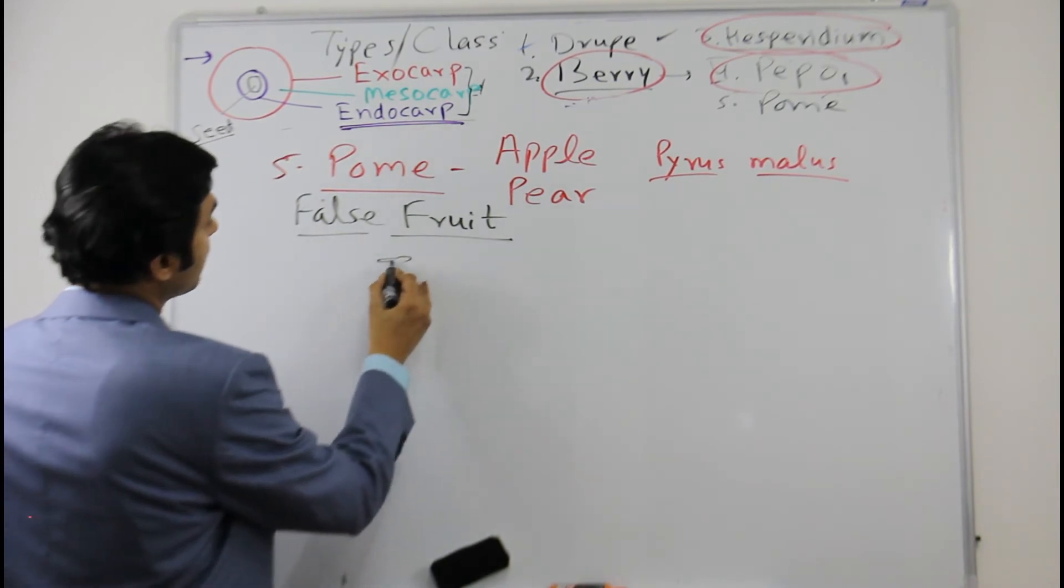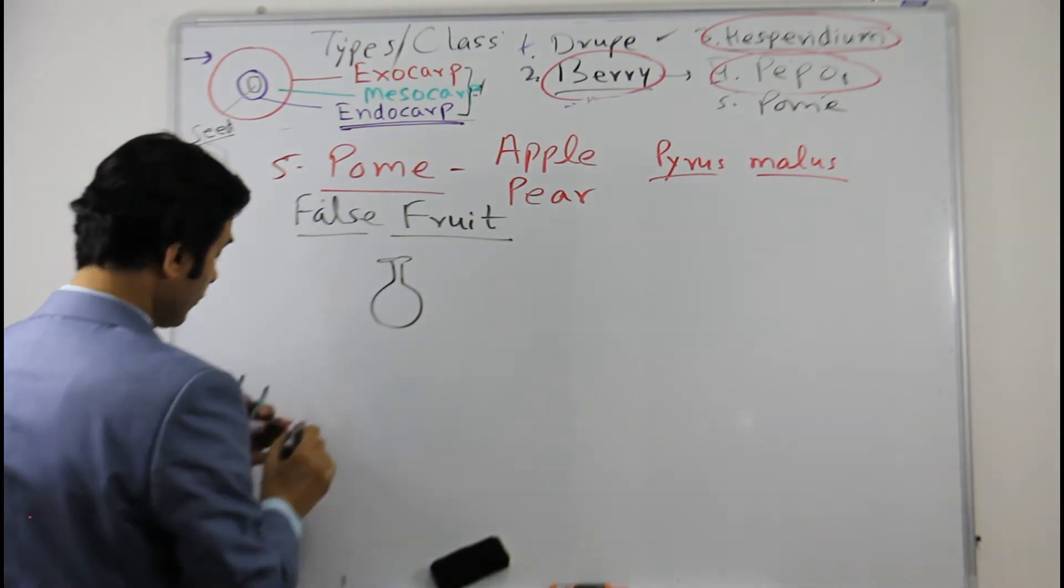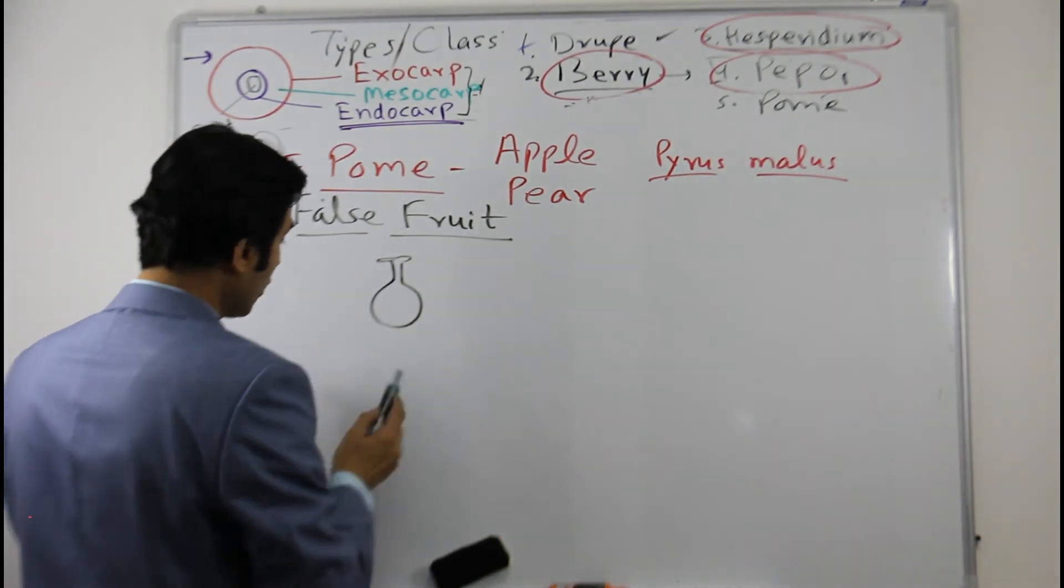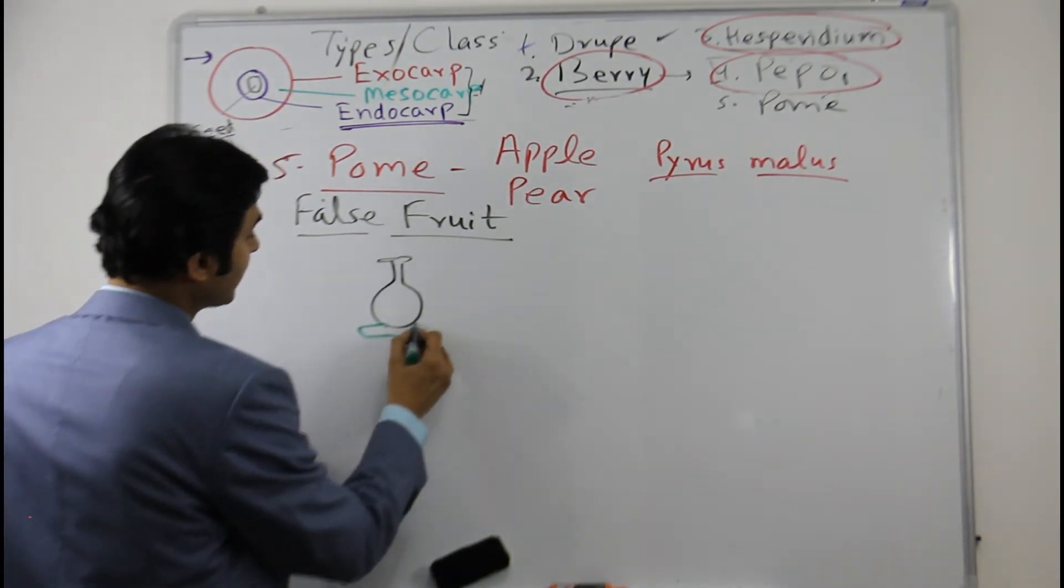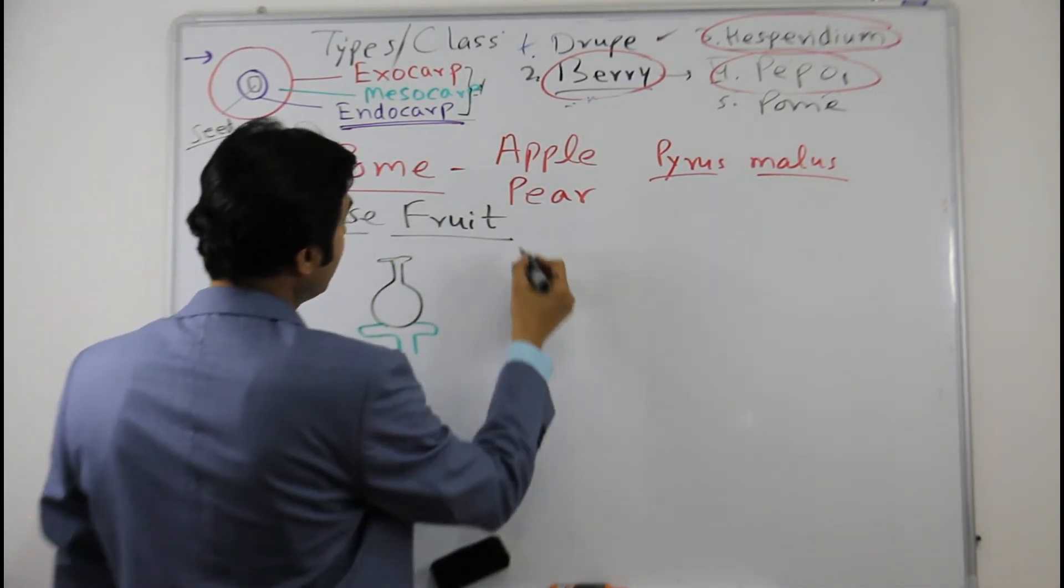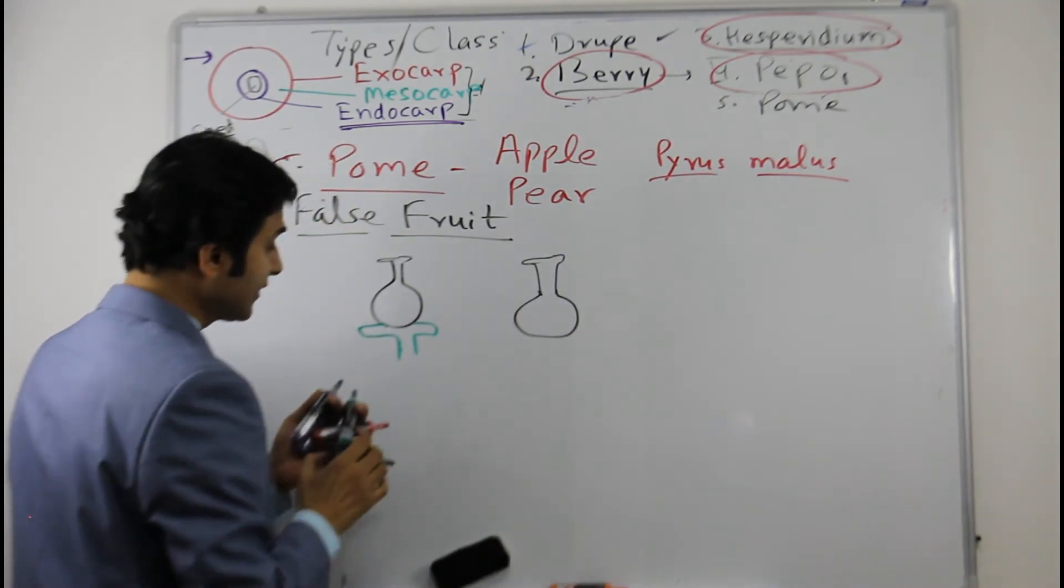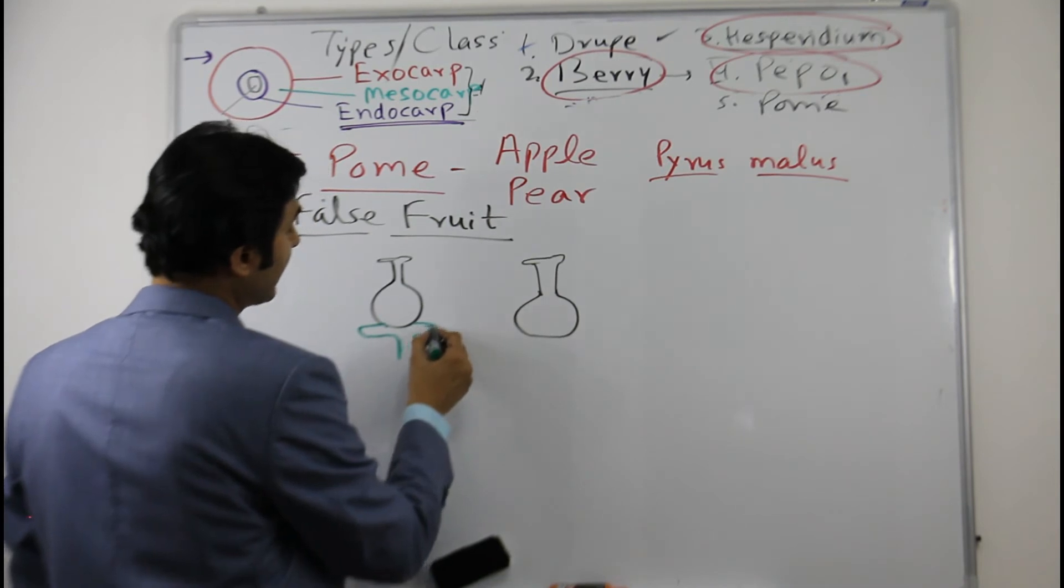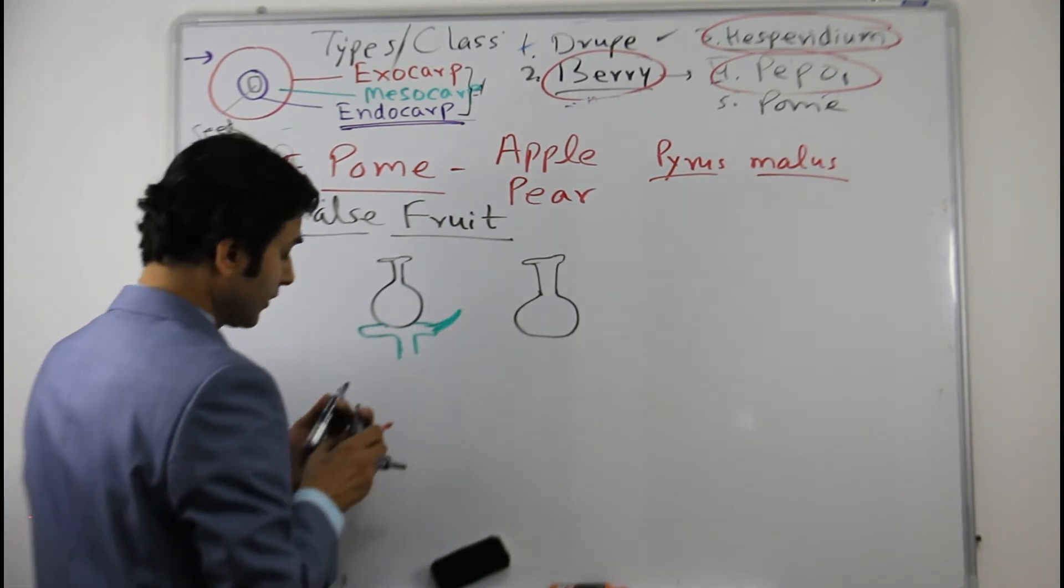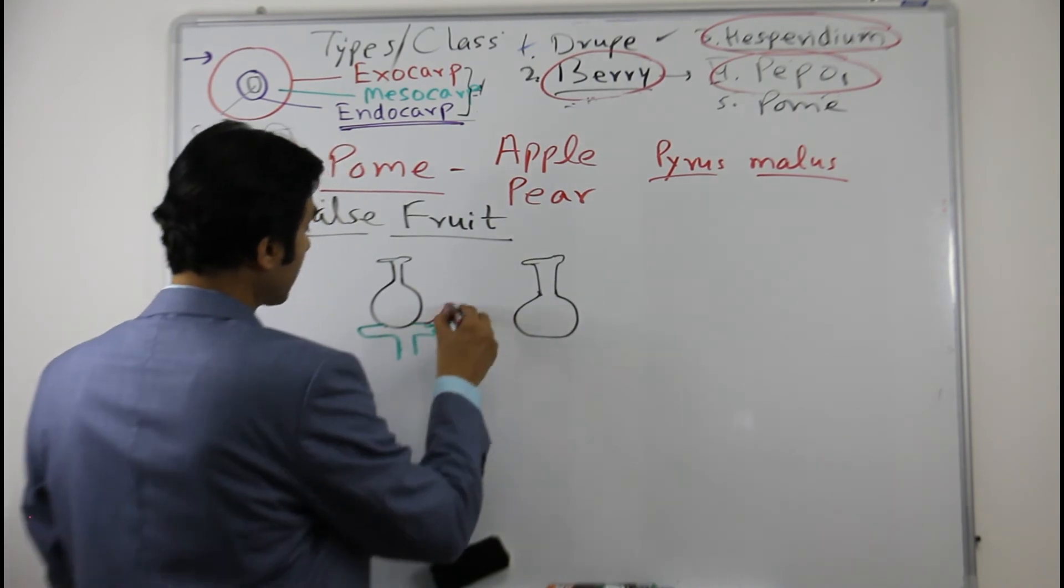So I will just draw it to show that this is the ovary, stigma, style, ovary. Normally as we know that the thalamus is like this, this is superior ovary. But in these cases what happens: stigma, style, ovary, the thalamus—always the calyx and corolla they come from the thalamus. So basically they are coming from here.